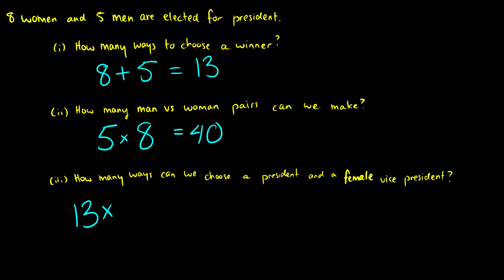If our first president is female, then our second choice for vice president is going to have one less woman in the pool. But if our president is male, then we have all eight women to choose from. So maybe we shouldn't say it's 13 times something. Maybe we should break this up and say, look, we have a male president or a female president.